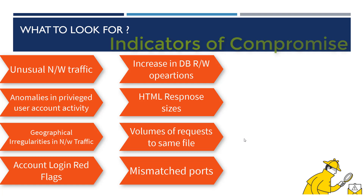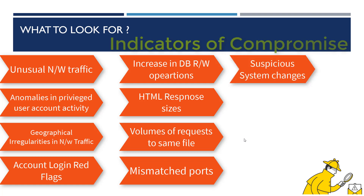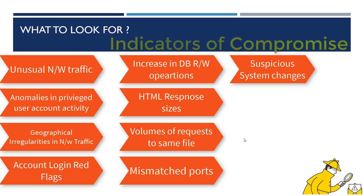Mismatched port application traffic — including secure or encrypted traffic appearing on plain ports — is also problematic. Suspicious file changes on your file system, or registry changes that you as an admin have never made, are indicators of compromise. You should deploy tools on the system to detect unknown registry or file changes. DNS, as the backbone of internet access, should also be monitored — unusual DNS requests propagating to your DNS server require careful attention.